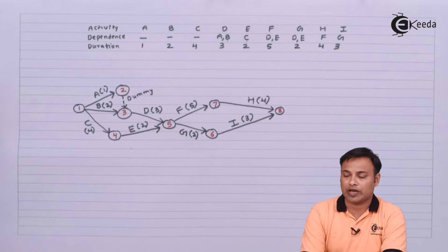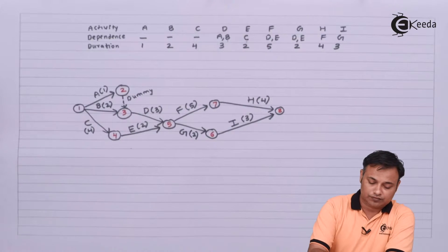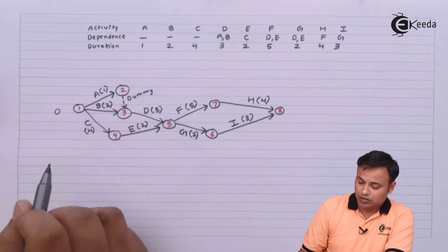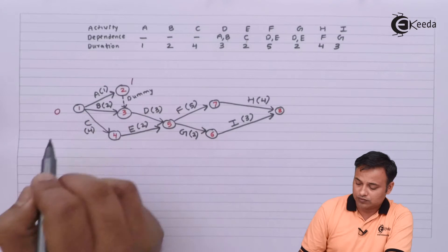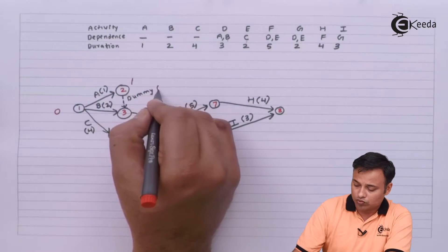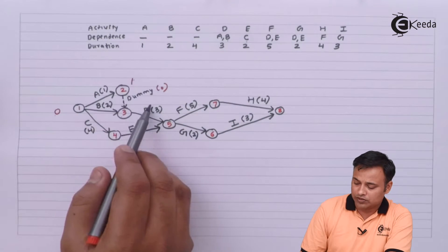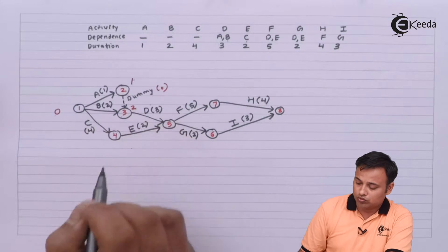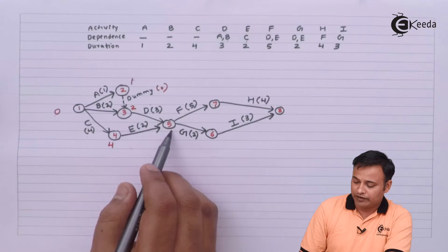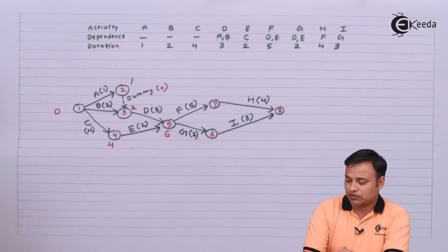Now we will work out the forward and the backward calculations. We will start with 0. At node 3 it will be 0 plus 2 or 1 plus 0, giving 2. At node 4 it will be 0 plus 4. At node 5 it will be 2 plus 3 = 5, or 4 plus 2 = 6, whichever is more.